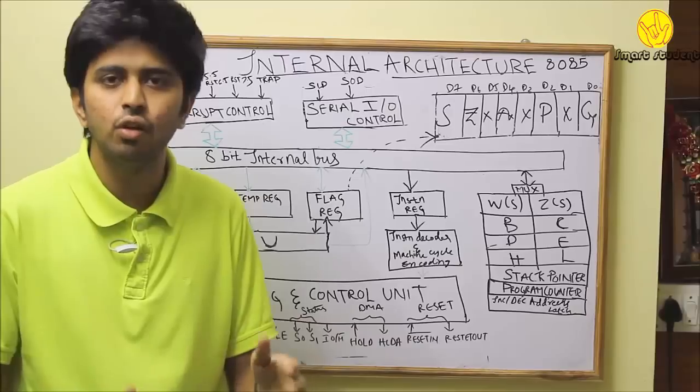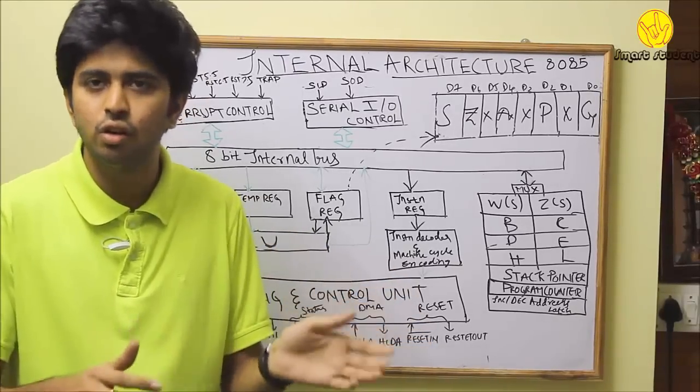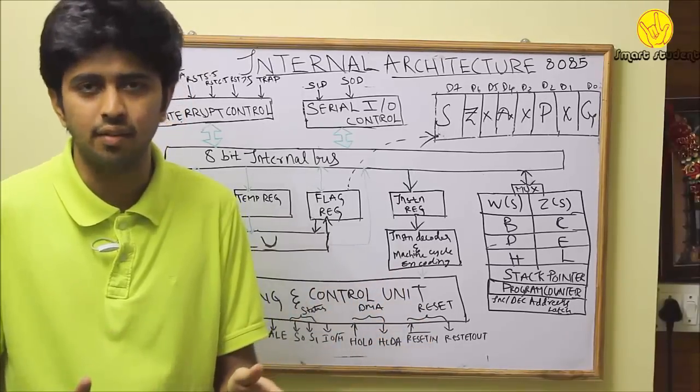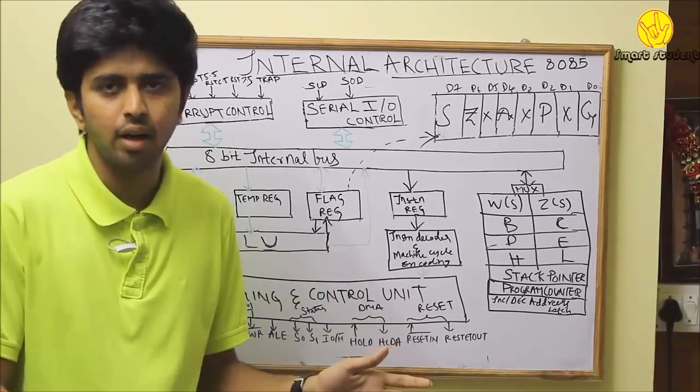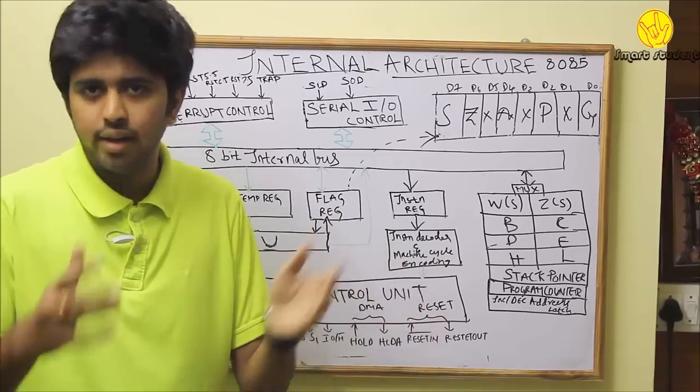ALE address latch enable consists of the lower bits of the address. A0 to A7 is multiplexed with the data D0 to D7. When lower signal is applied, address is used. When higher signal is obtained, data is used.